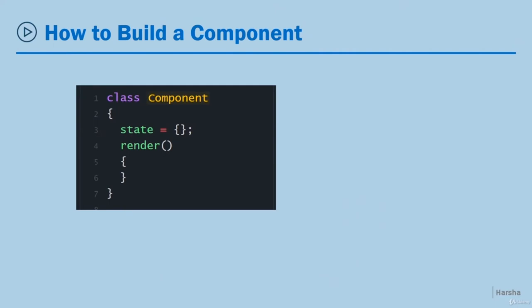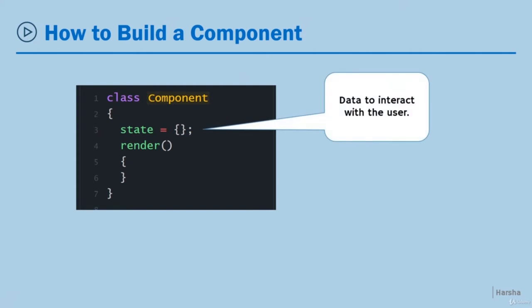How do you create a component? By definition, a component is a class that contains some state — the data you want to render to the user. All that data will be stored in the form of a JavaScript object, and that object is called the state. For example, in a food ordering application, you might display food item name and price, so you have that item name and price in the form of an object — that is called the state.